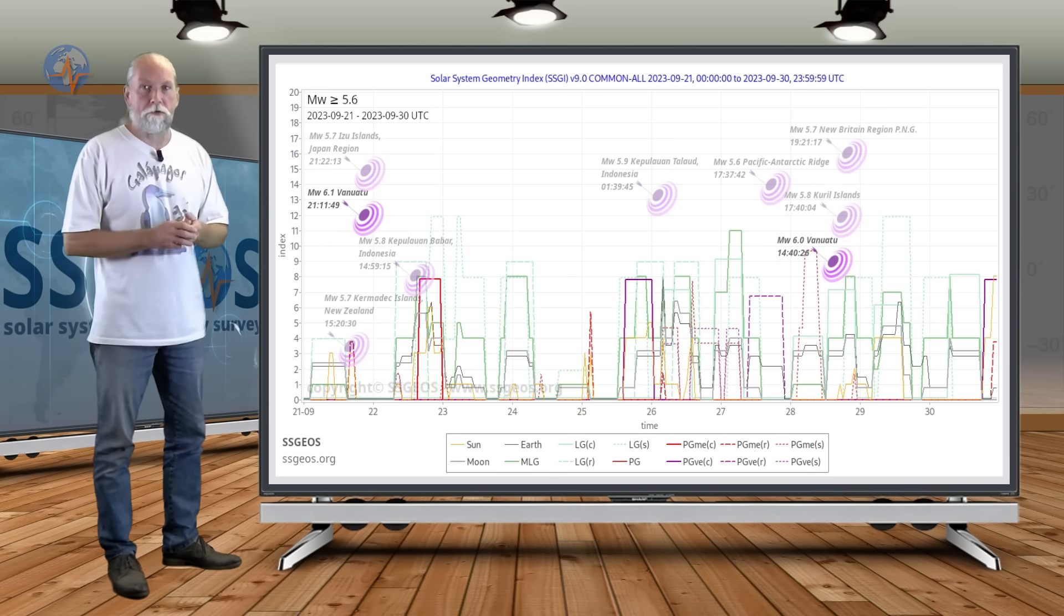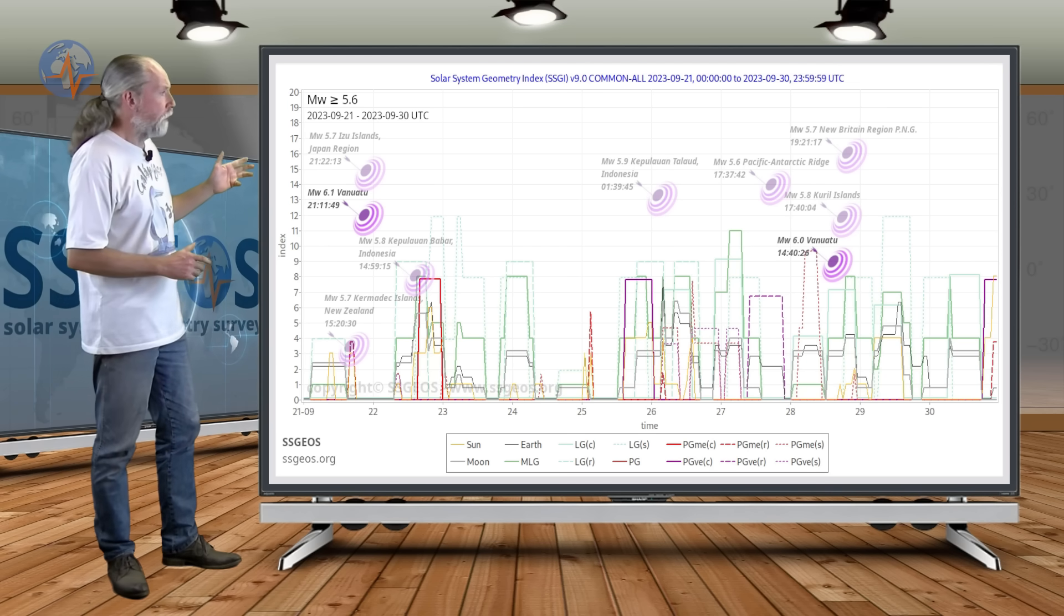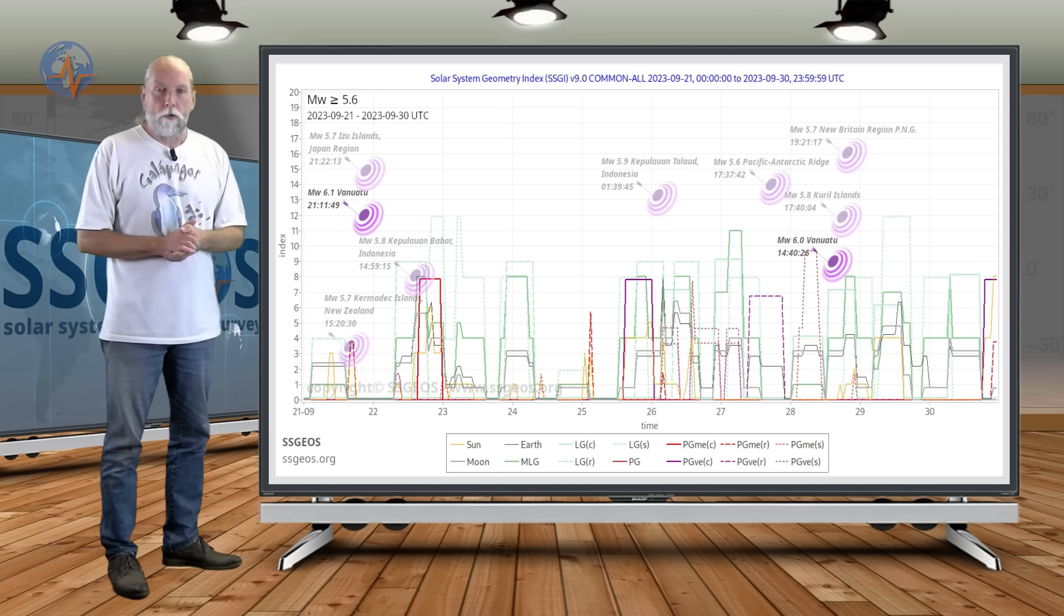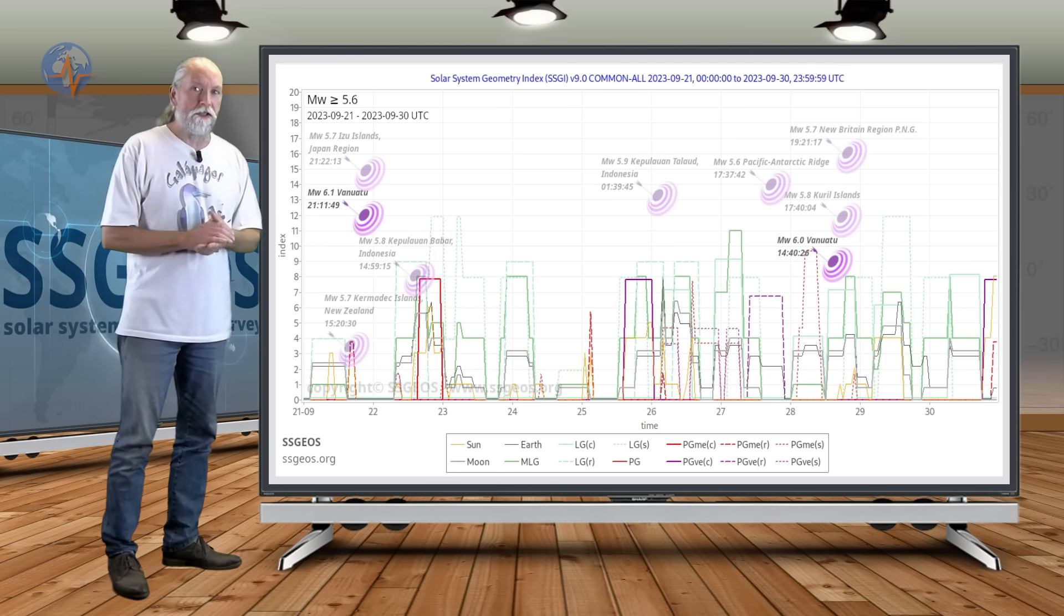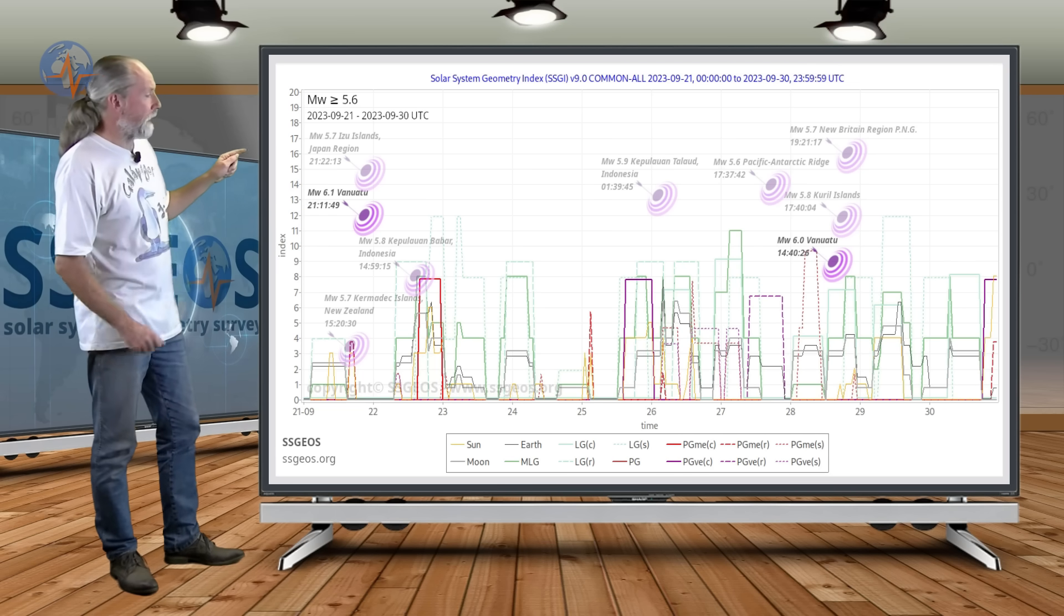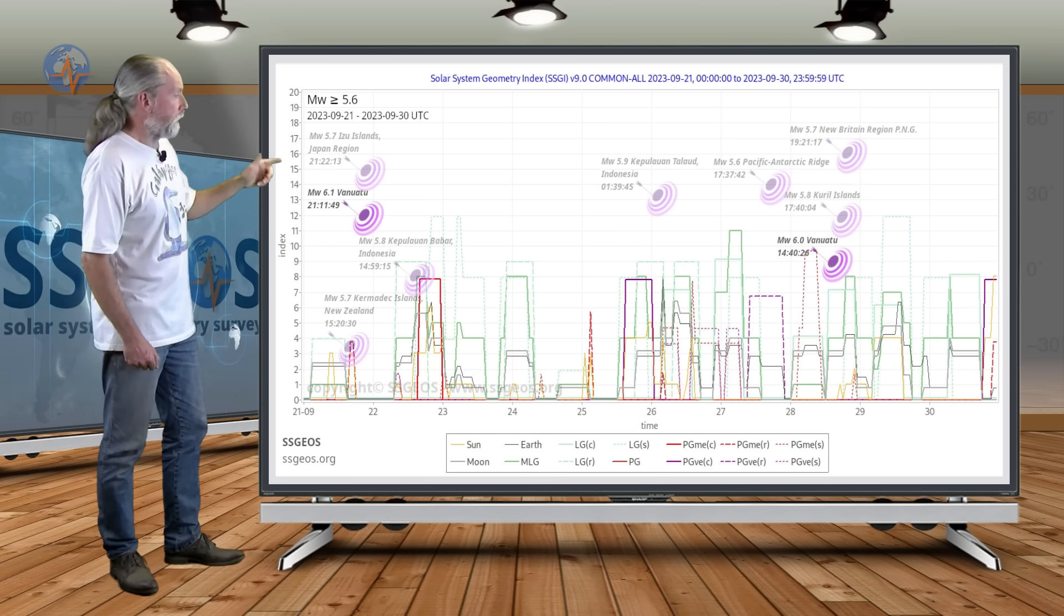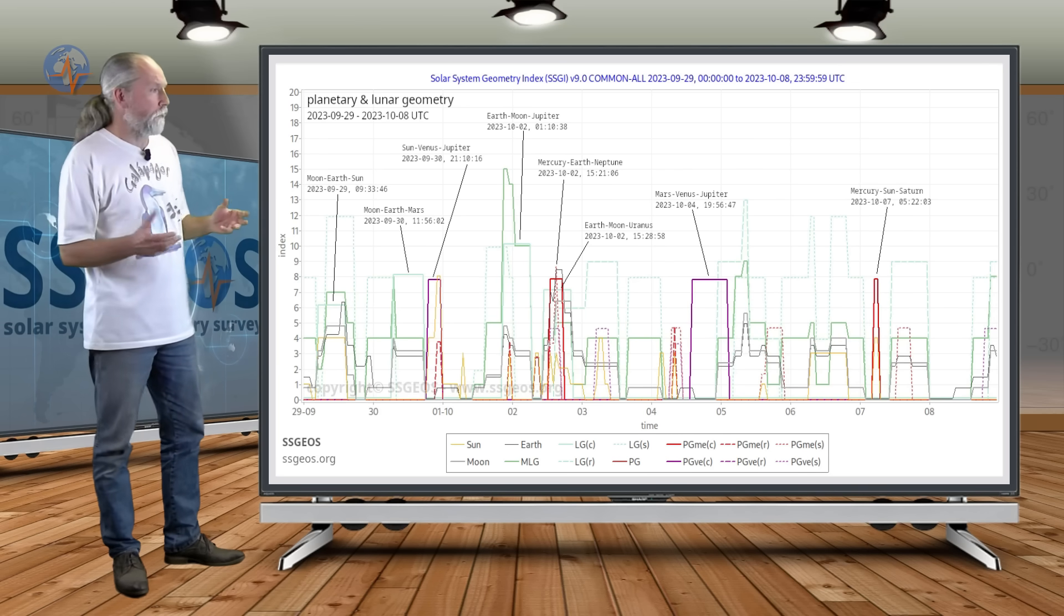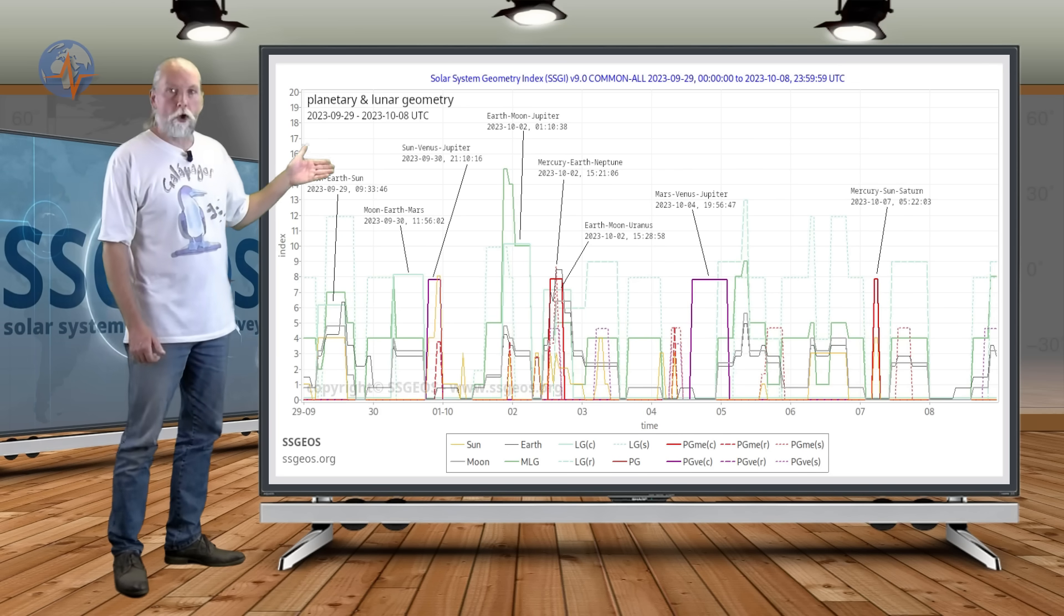The planetary conjunctions were spread out over the three days. So we had this critical timeframe from the 26th to the 28th. We had the clustering that we initially anticipated. So we have to look at the planetary and lunar geometry that we're going to have in the next timeframe. That is up until October 8th.